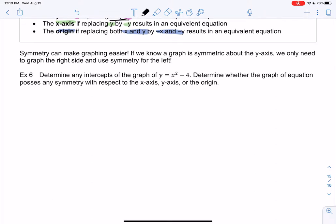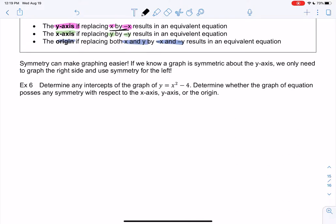We might already know what this looks like, but let's check symmetry using the formulas above rather than the graph. And then we can look at the graph after. Actually, let's do intercepts first because that's faster, and then we'll do symmetry.